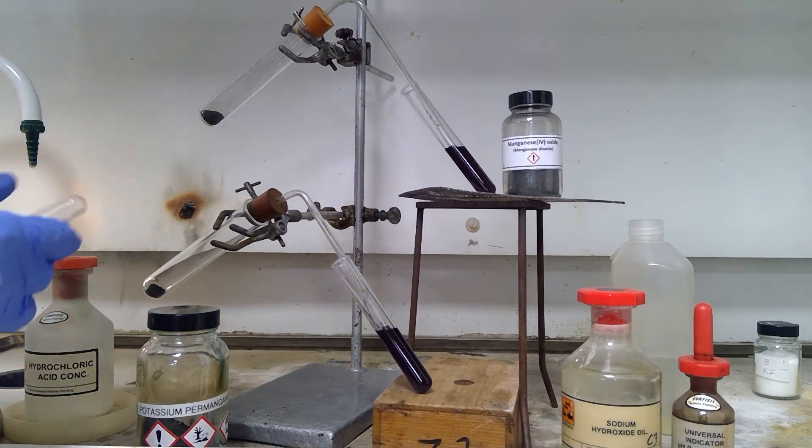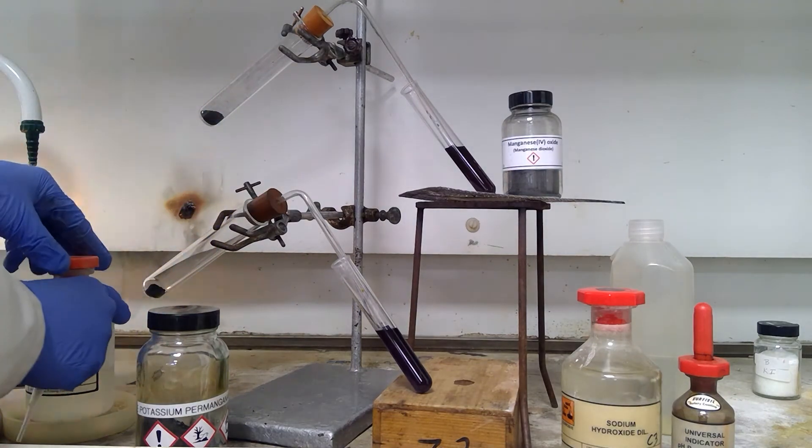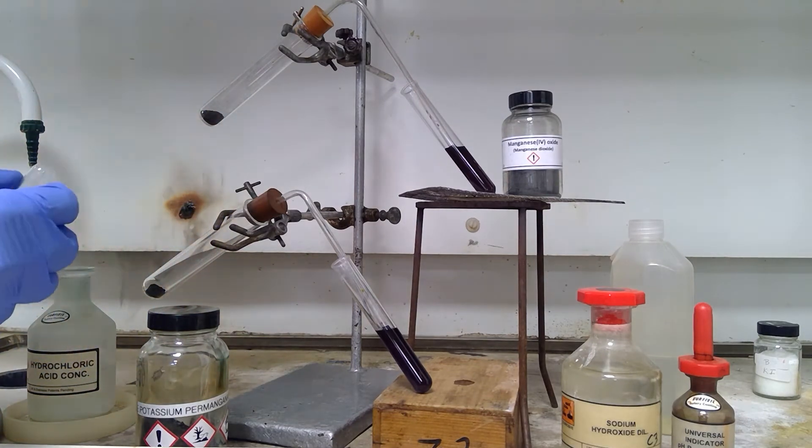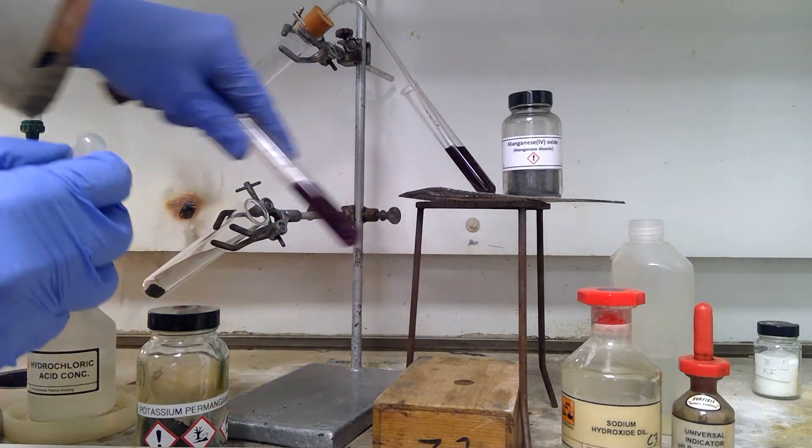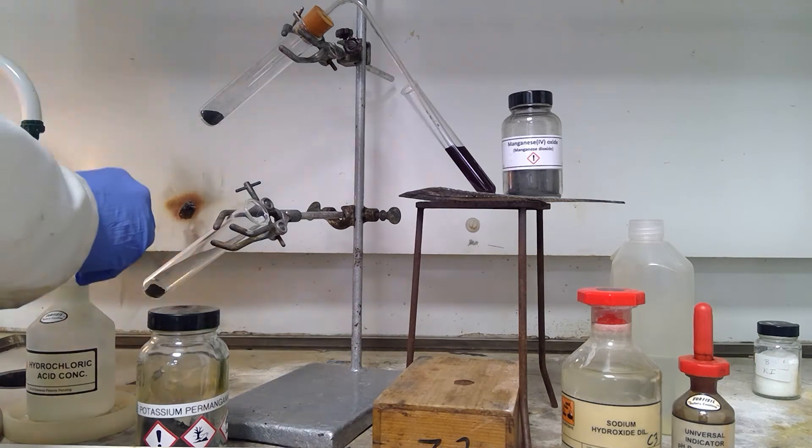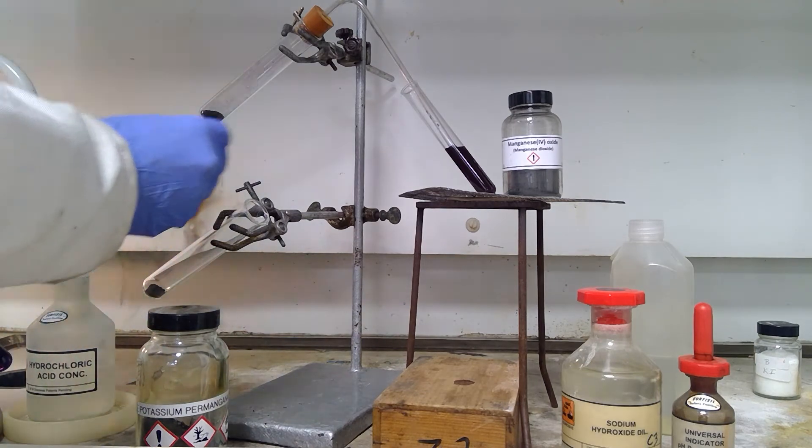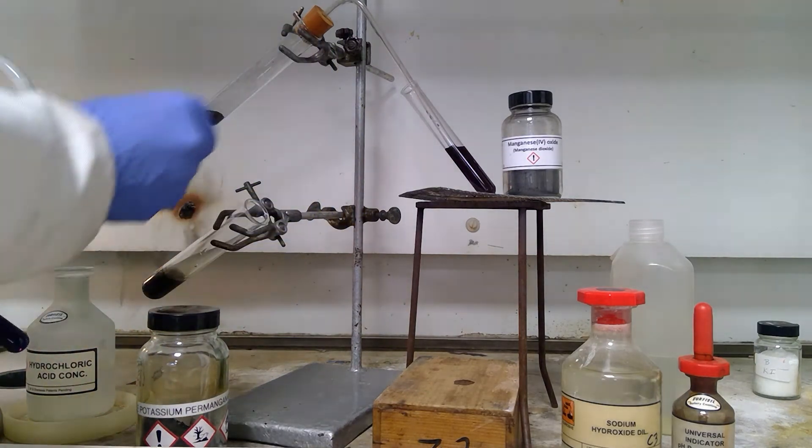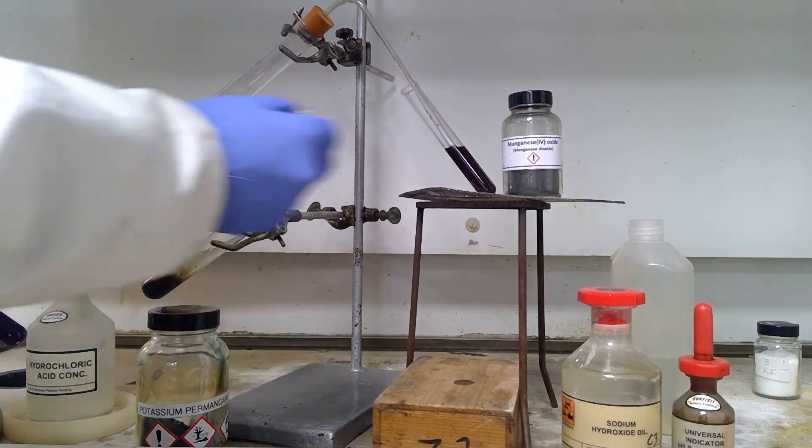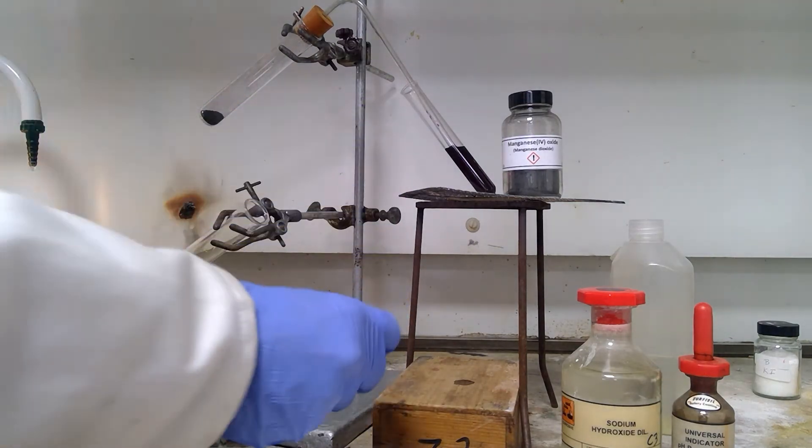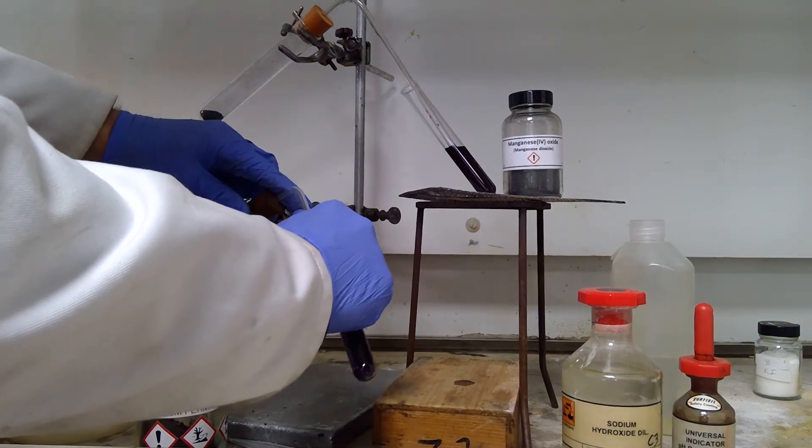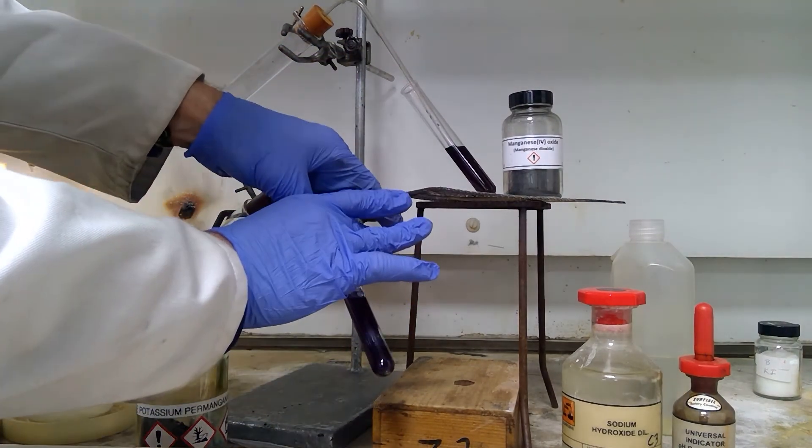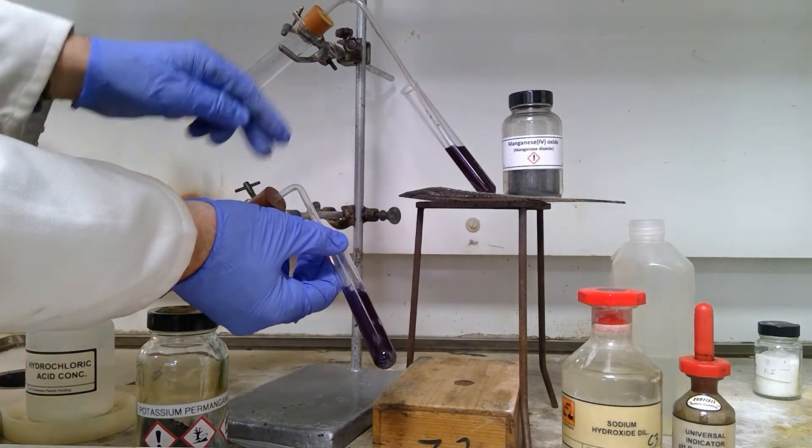So first, we're going to add some concentrated hydrochloric acid to the apparatus at the bottom, about 3 cm³. You can see that the gas is produced very rapidly. You can see very quickly that a gas is produced.